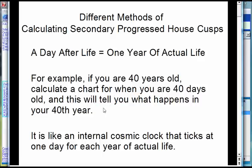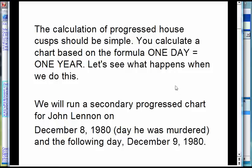Suppose you're 40 years and three months old. Then three months is one-fourth of a year, so you do 40 and one-fourth days. It would be calculated precisely because you have this internal cosmic clock — every year of your life this internal astrological clock goes around one day. Sounds weird if you're not familiar with it, but that's the idea. You add a day for each year of life and you get this chart.